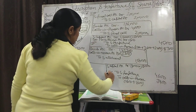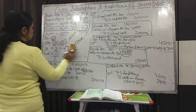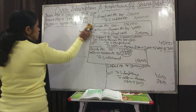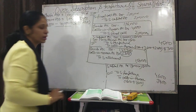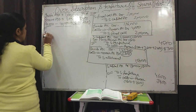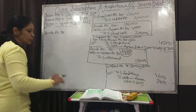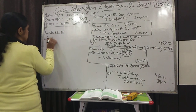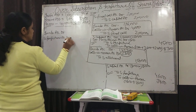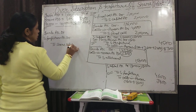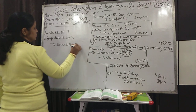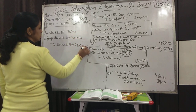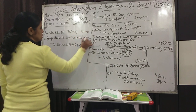After forfeiture, company reissues all 2,000 shares at ₹7 fully paid up. Journal entry: bank account debit (2,000 × ₹7 = ₹14,000), share forfeiture account debit (2,000 × ₹3 discount = ₹6,000), to share capital (2,000 × ₹10 = ₹20,000).